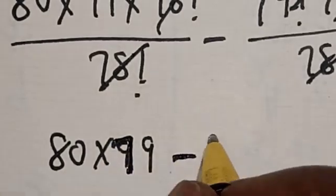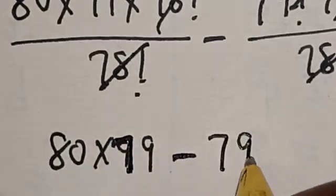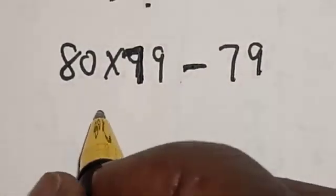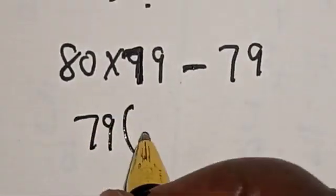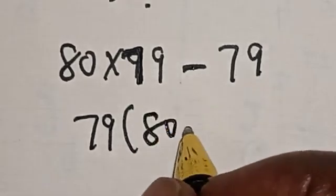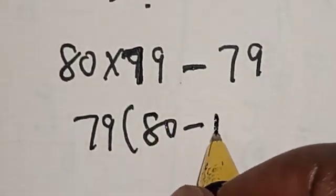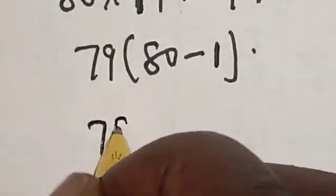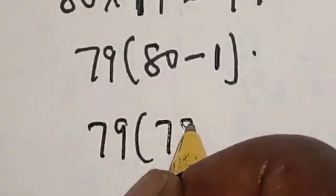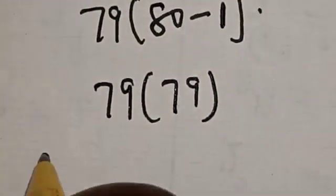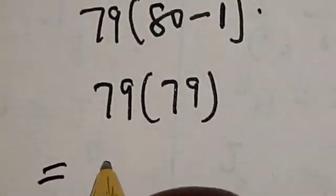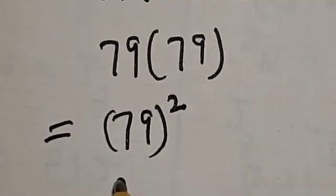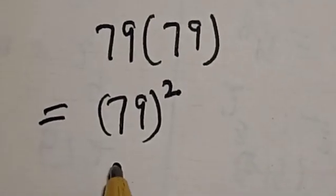We have 79 here and 79 here, so we factor out 79: this gives us 79 into (80 minus 1), which is 79 multiplied by 79, equal to 79 squared. And 79 squared is equal to 6241.